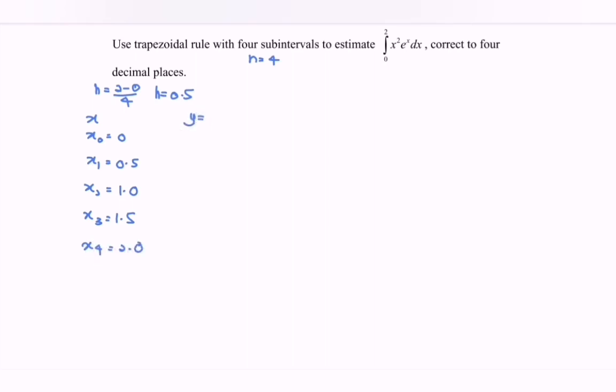Next, we have the value of y, where we have x squared multiplied with e to the power of x. So if we substitute 0, the y naught will be equal to 0. Next, we have y sub 1, y sub 2, y sub 3. So, refer to the calculator, and we will have the values.